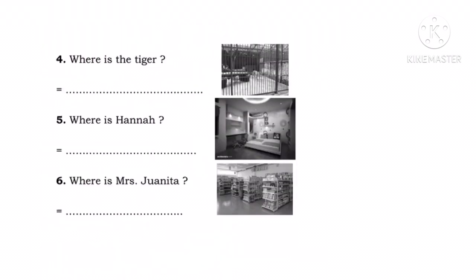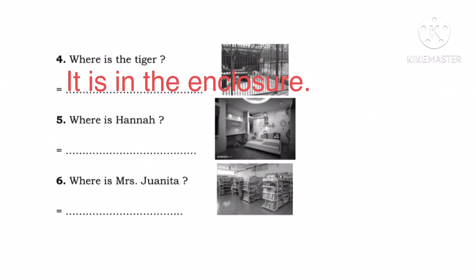Number four. Where is the tiger? Di mana macarnya? It is in the enclosure — itu ada di dalam kandang. The tiger itu sama dengan hewan, jadi kita ganti dengan subjek it. Dan letakkan to be is setelah subjek it.